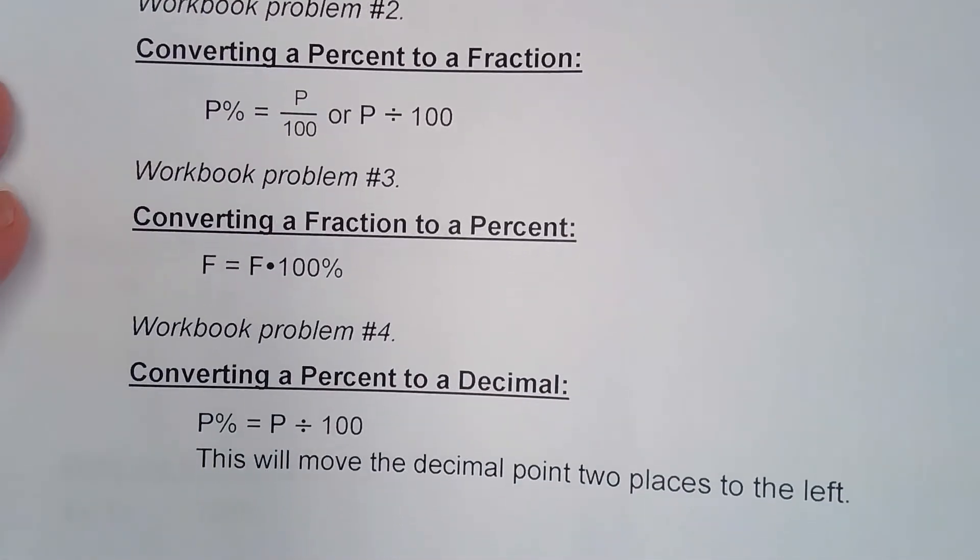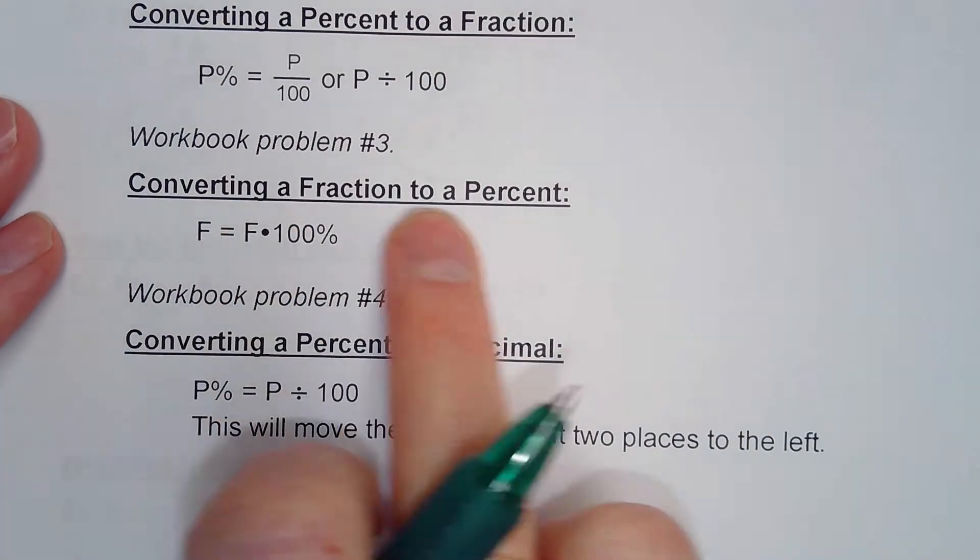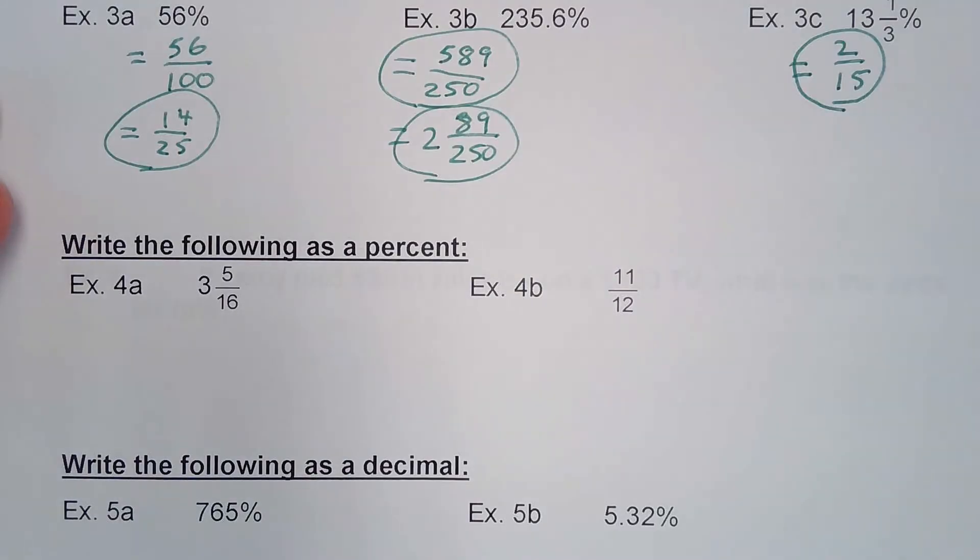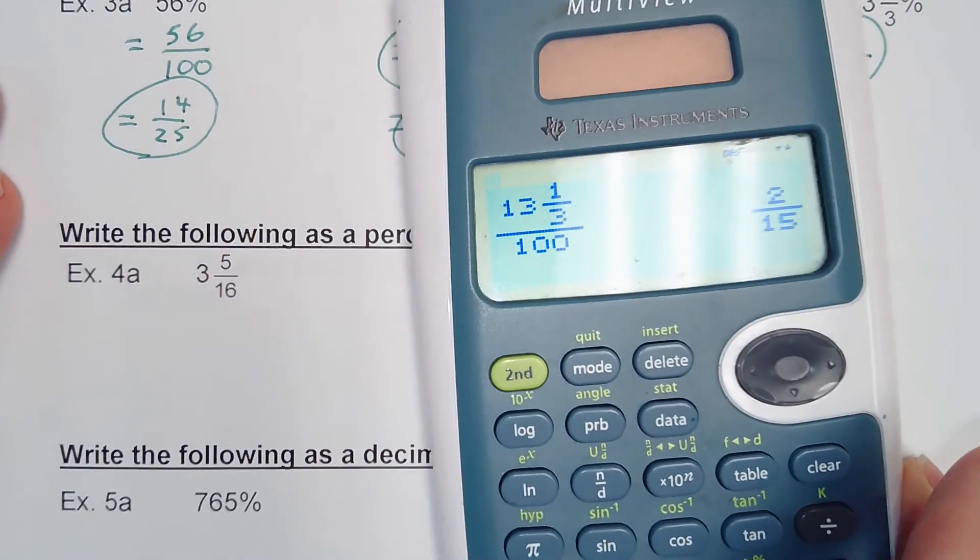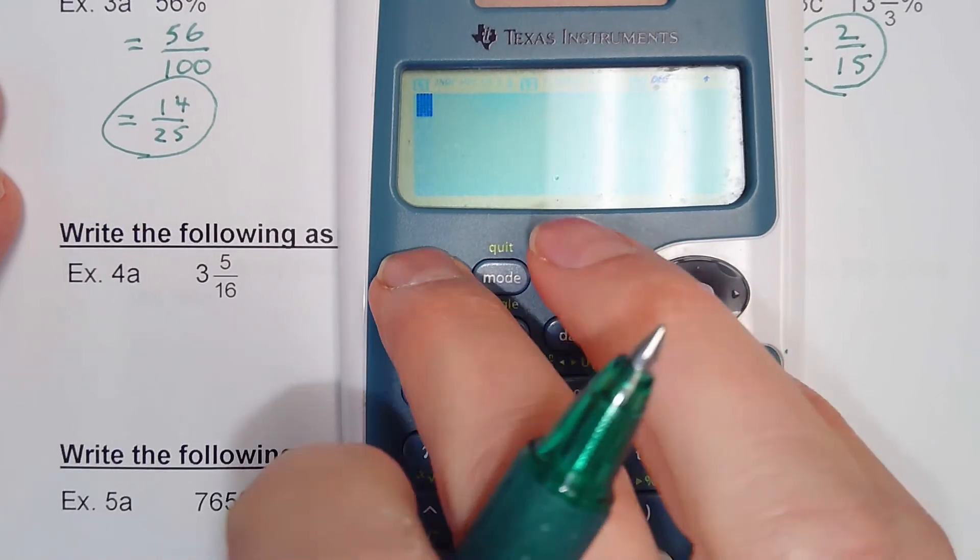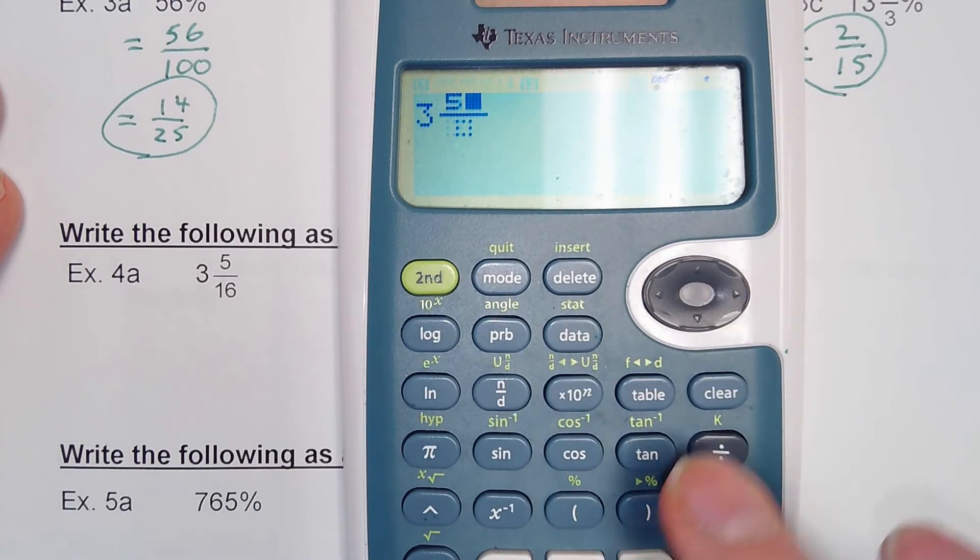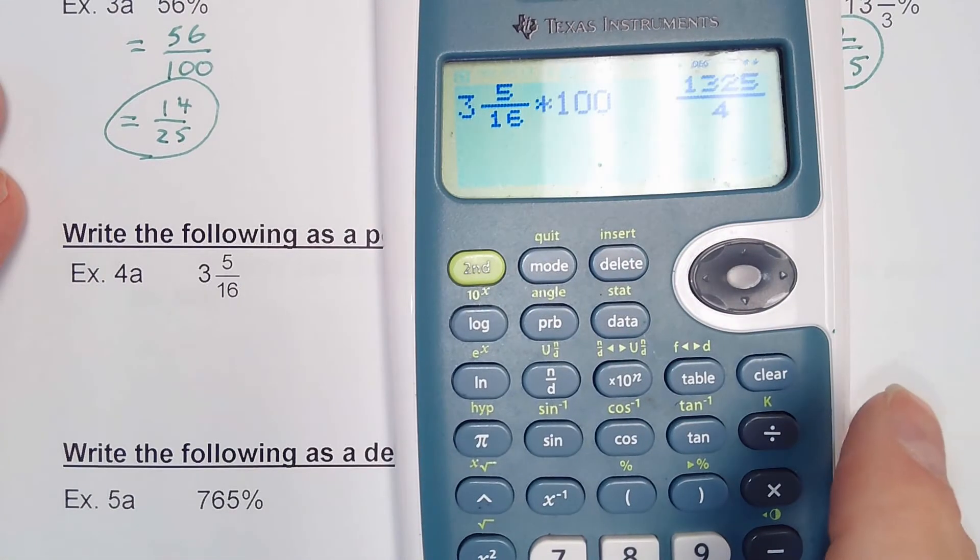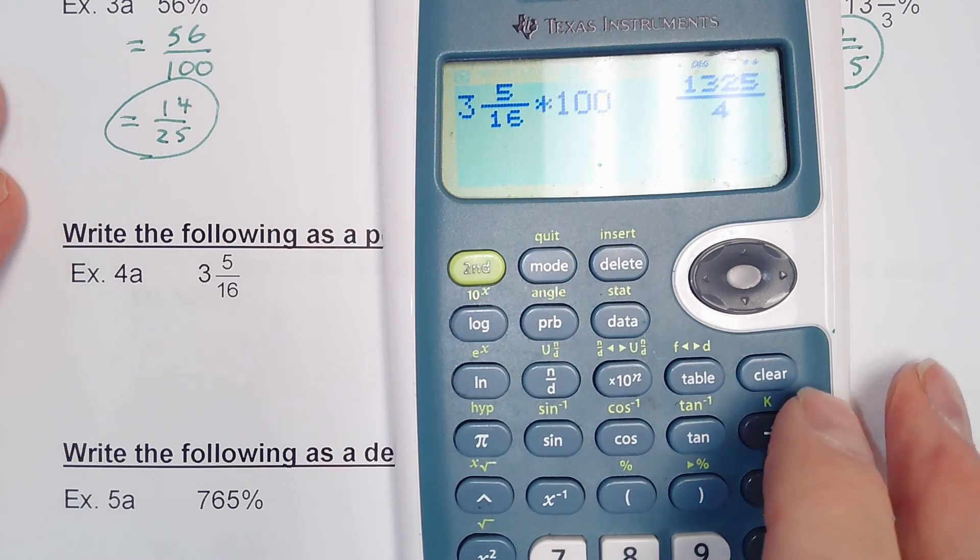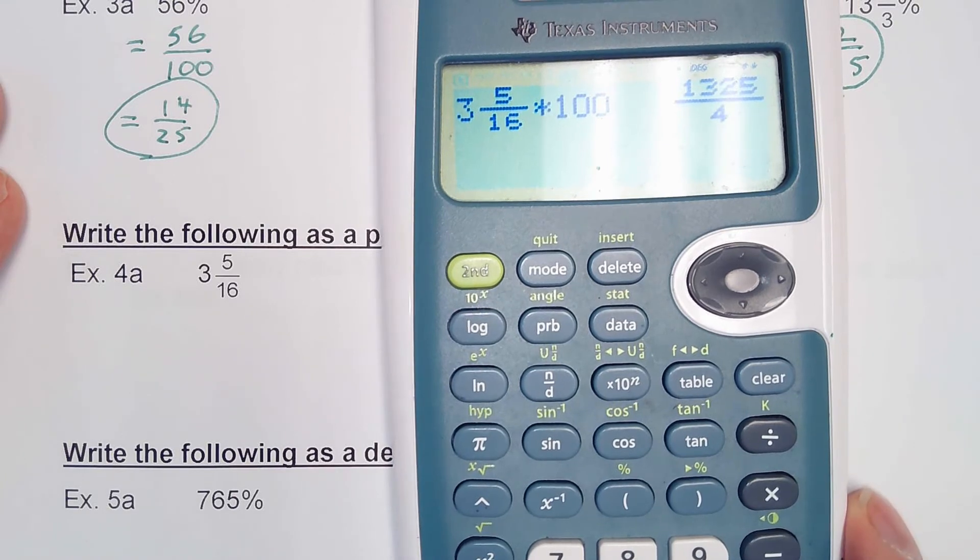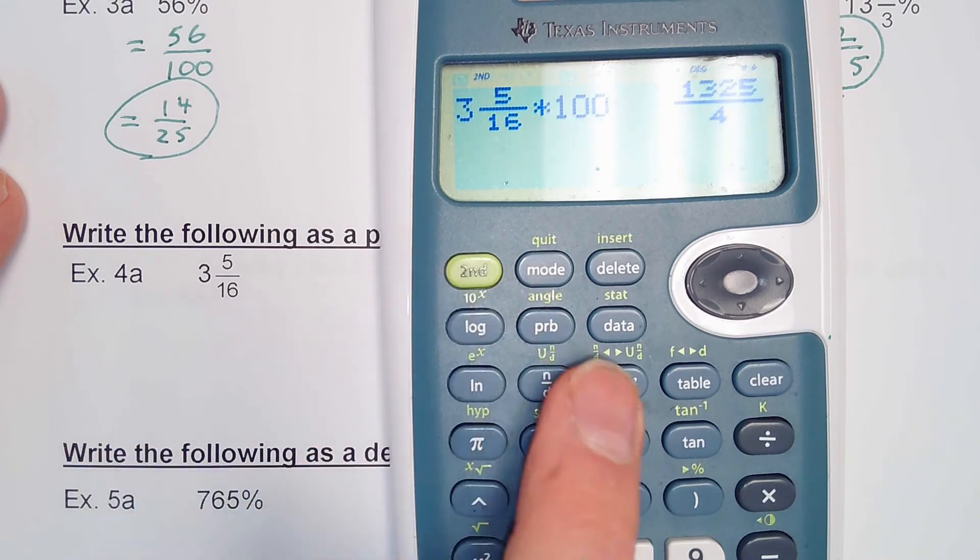Now if we need to go in the opposite direction, converting a fraction to a percent, we're just going to multiply it by 100%. So if I have 3 and 5/16, let's just type in second fraction key, 3 5/16, and I'm going to multiply it by 100. And now again, depending on what they want in MyLabsPlus, more than likely at the very least they're going to want to write this as a mixed number.